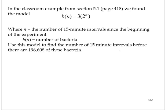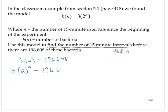We're asked to find the number of intervals, find n, before there are 196,608 of the bacteria. So b(n) = 196,608, which implies that 3(2^n) = 196,608.